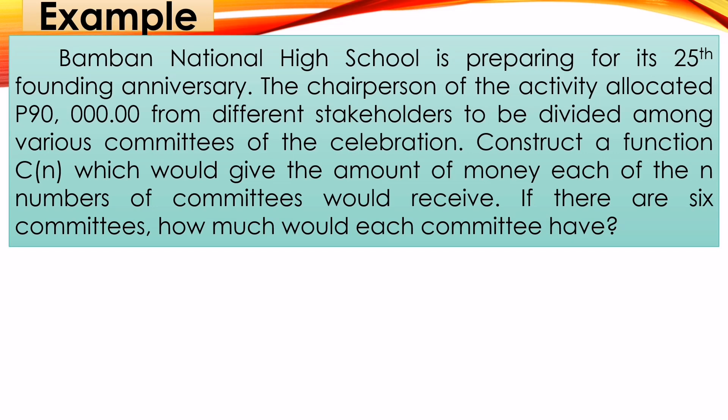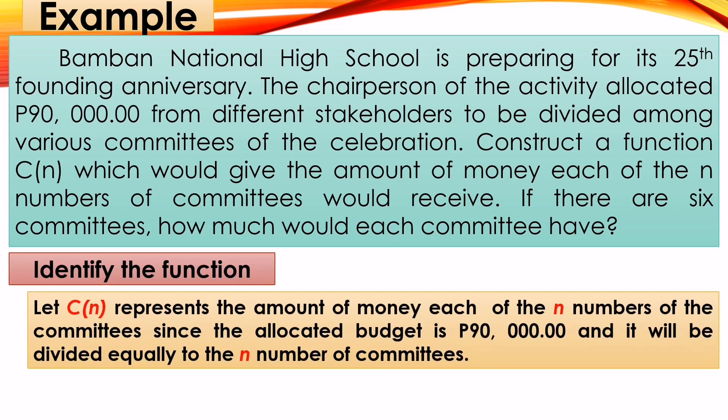Step number one, we need to identify what is our function. Let C(n) represent the amount of money each of the n number of committees. Since the allocated budget is 90,000 pesos and it will be divided equally to the number of committees, our function is C(n) is equal to 90,000 divided by n, because the allocated budget is 90,000 and we'll divide it by the number of committees which is represented by n.